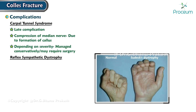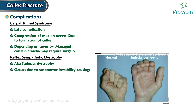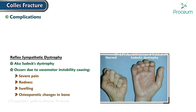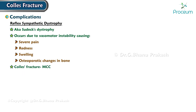Reflex sympathetic dystrophy, also known as Sudeck's dystrophy, occurs due to vasomotor instability, causing severe pain, redness, swelling, and even osteoporotic changes in the bone. Collis fracture is the most common cause of Sudeck's dystrophy in the upper limb, and it has a prolonged course managed mostly with physiotherapy.